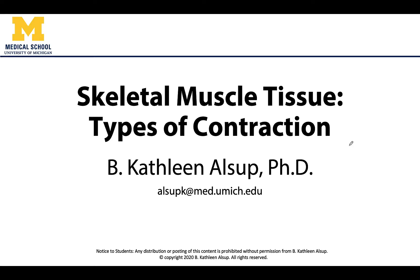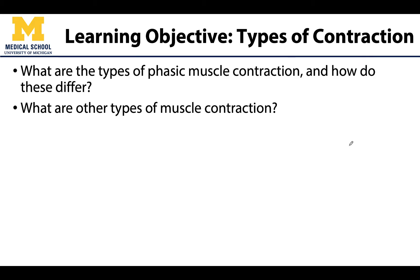Hello all, this is Dr. Alsup. In this video we will be discussing the types of contraction that can occur at muscle, and specifically we are going to focus on the types of phasic muscle contraction or active contraction. But we will touch on other types of contraction like reflexive or tonic contractions, because they do certainly play an important role in the musculoskeletal system.